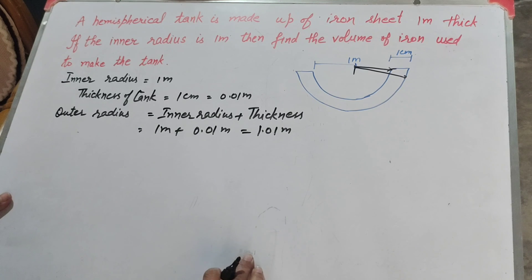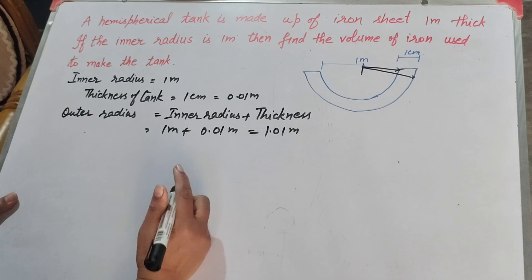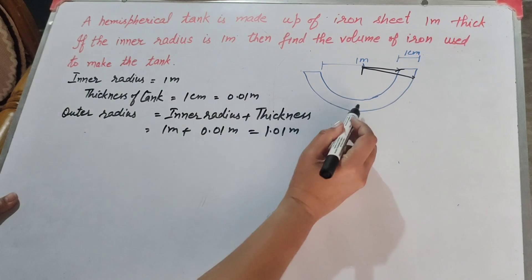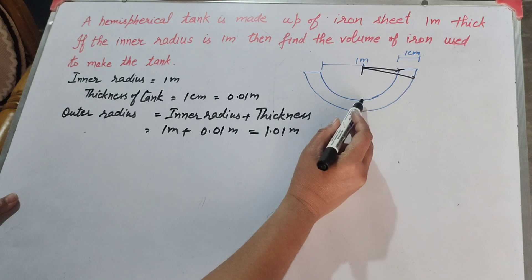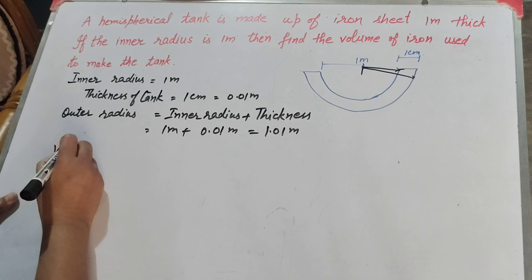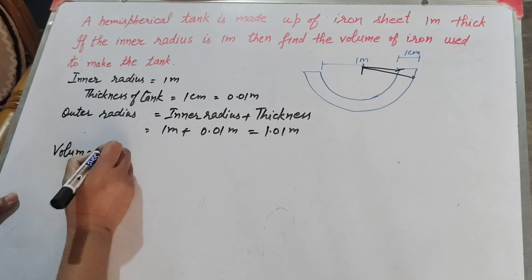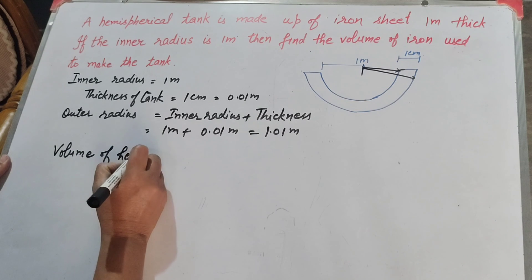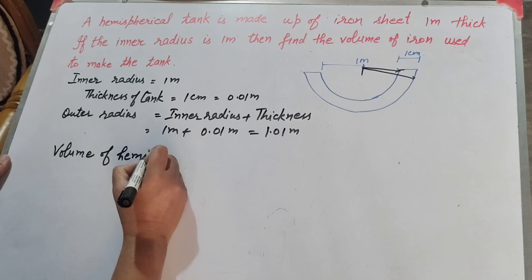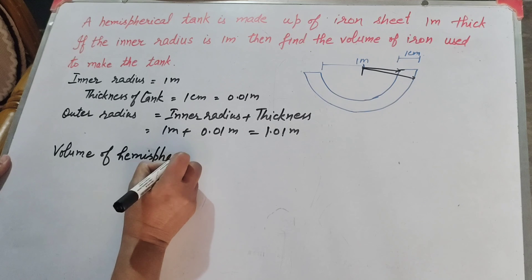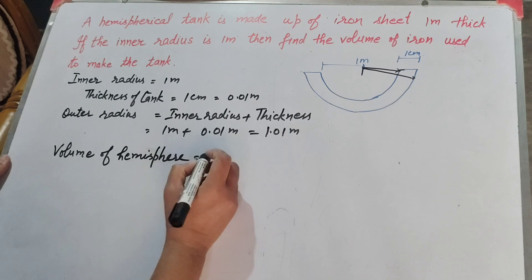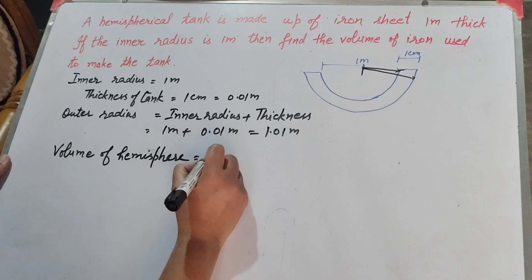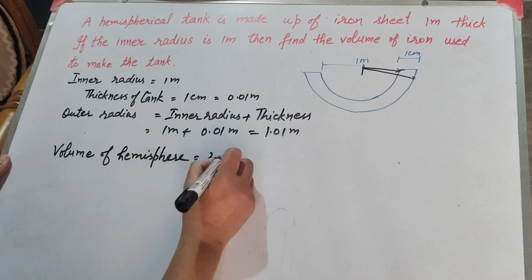Now we find the metal used to make the tank, so we need to find its volume. We know the formula to find the volume of a hemisphere, because this tank is a hemisphere. The formula is equal to (2/3)πr³.